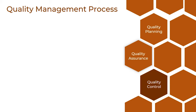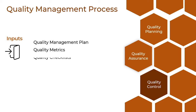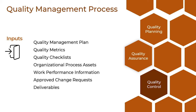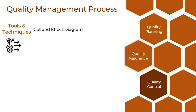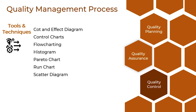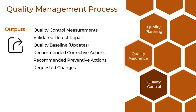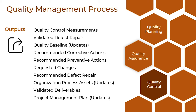Then we have to perform quality control as our last phase. Inputs include quality management plan, followed by quality metrics and quality checklists. Then we have organizational process assets and work performance information, as discussed in the other two phases. We also have approved change requests and deliverables as inputs. Coming to tools and techniques, we have cause and effect analysis, control charts, flow charting, histogram, Pareto chart, run chart, scalar diagram, statistical sampling, inspection, and defect repair review. Coming to outputs, quality control measurements, validated defect repair, updated quality baseline, and recommended corrective and preventive actions. Then we have required changes, recommended defect repair, organization process assets, validated deliverables, and updated project management plan.